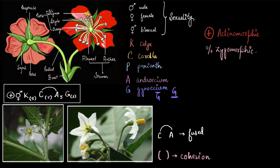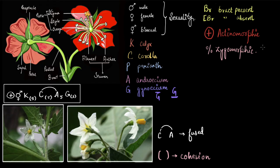Apart from this, we also see bracts mentioned in the floral formula. A bract is not a leaf — it is present above the leaf and below the sepals. It is represented by the symbol Br, meaning bracteate — a flower in which a bract is present — and EBr means ebracteate, or the absence of a bract. With this, we have covered all major symbols required to write a floral formula.